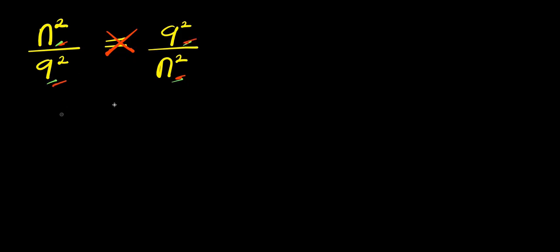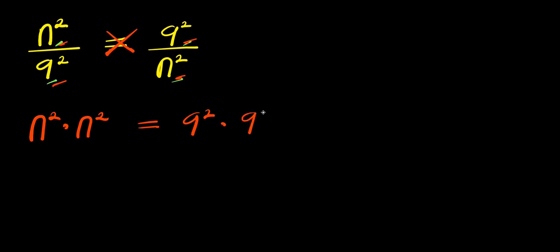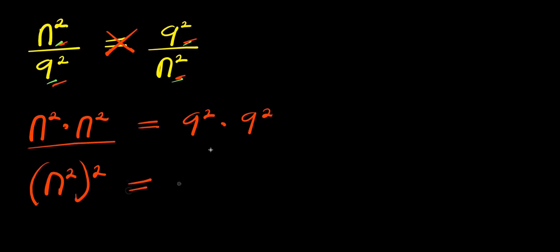So let's cross multiply. n power 2 times n power 2 equals 9 power 2 times 9 power 2. Now we can express the left side as n power 2 raised to the power of 2, and the right side as 9 power 2 raised to the power of 2.